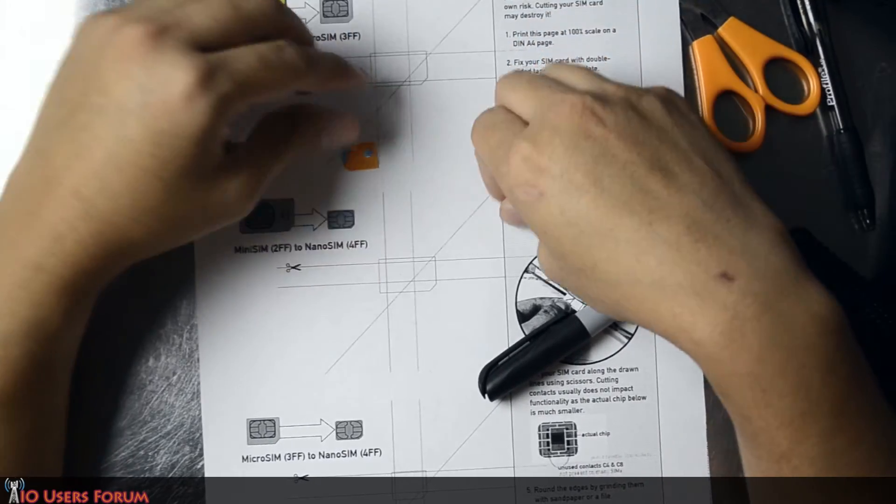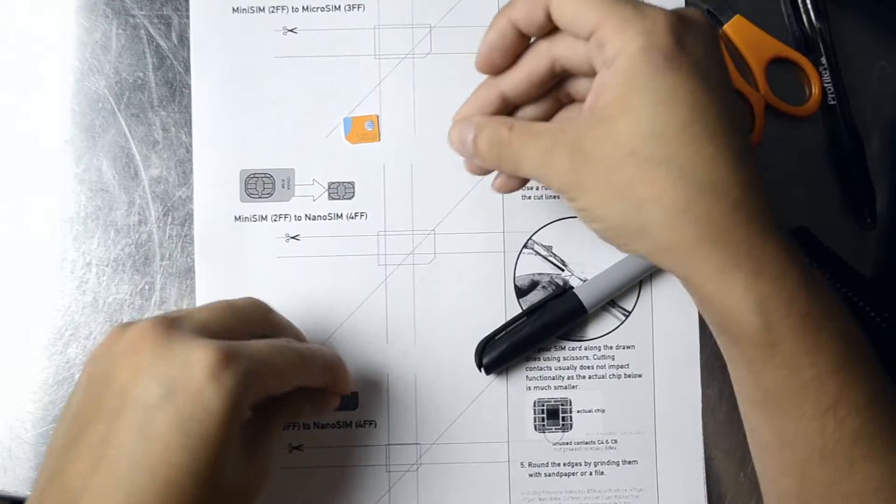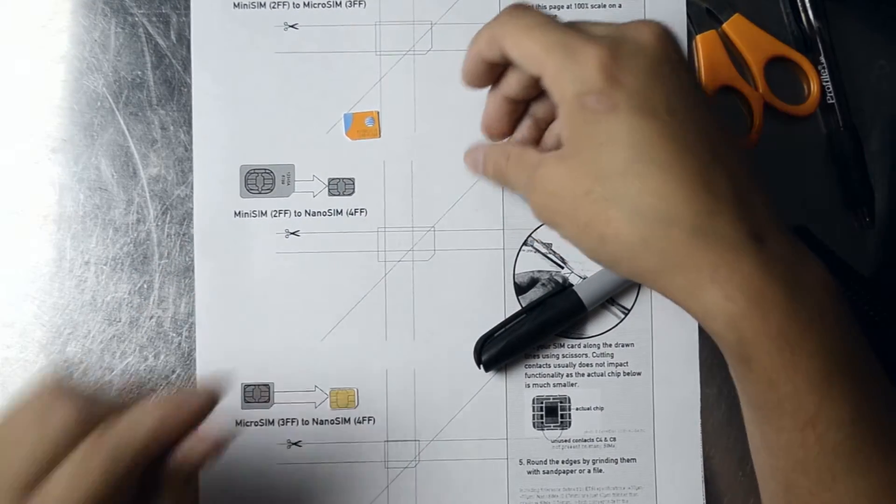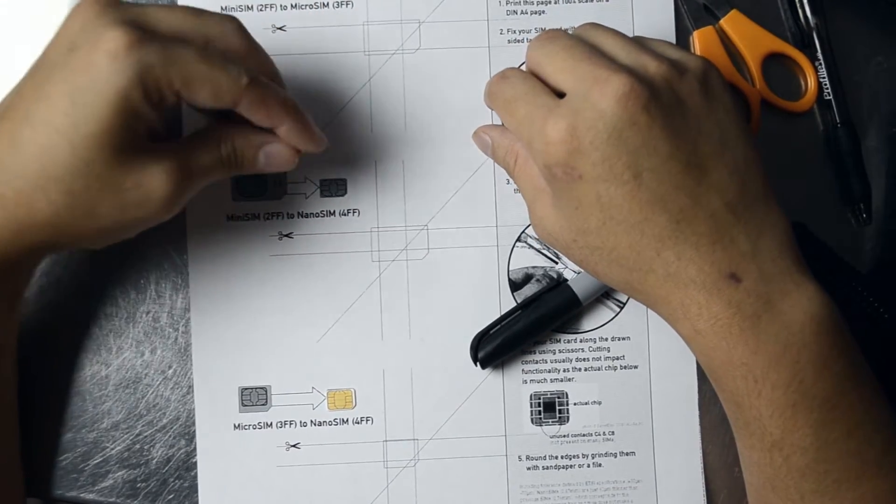Nowadays, some of them have actually gone down to the nanoSIM. So, if you go somewhere and they don't have an actual tool to cut these and they don't have the card available,